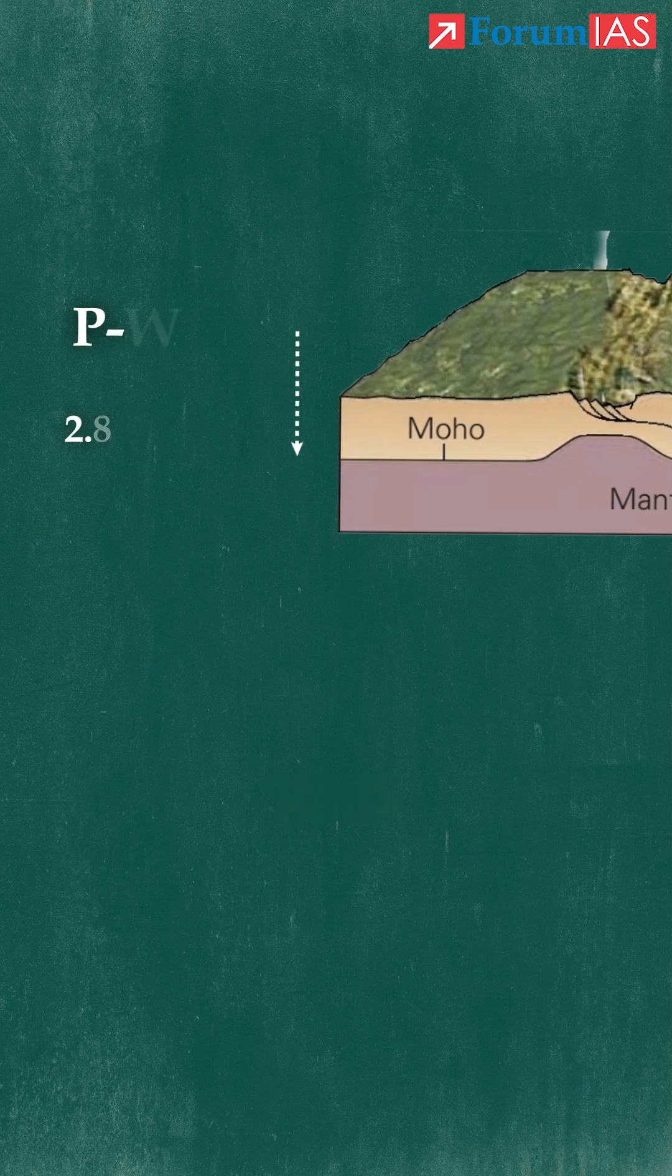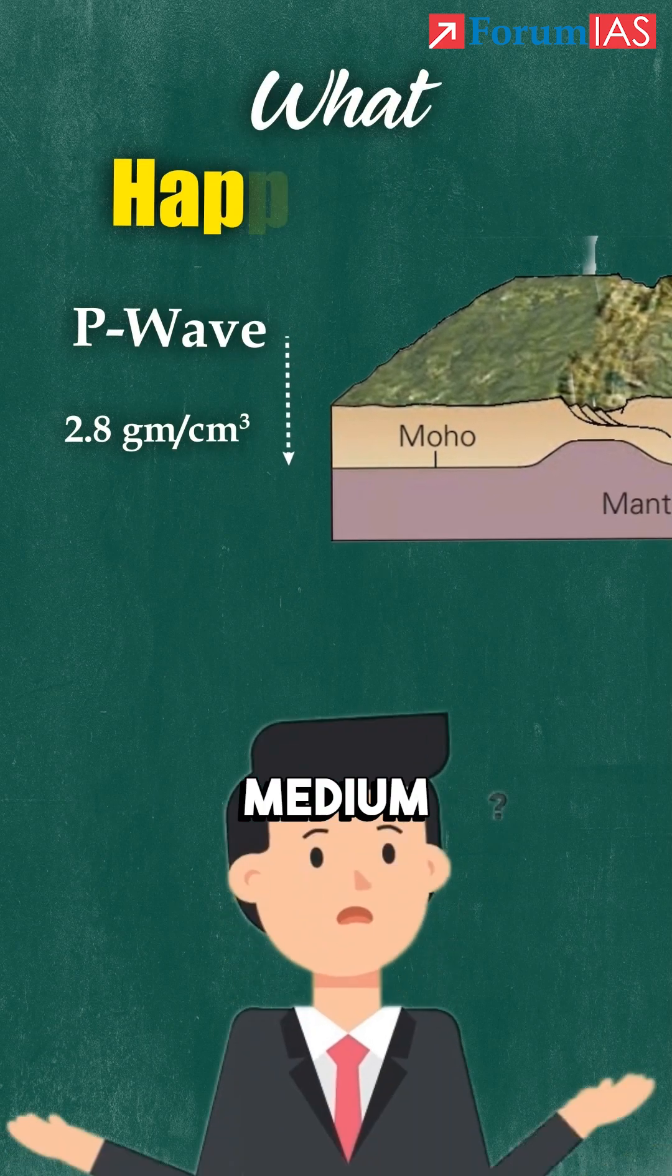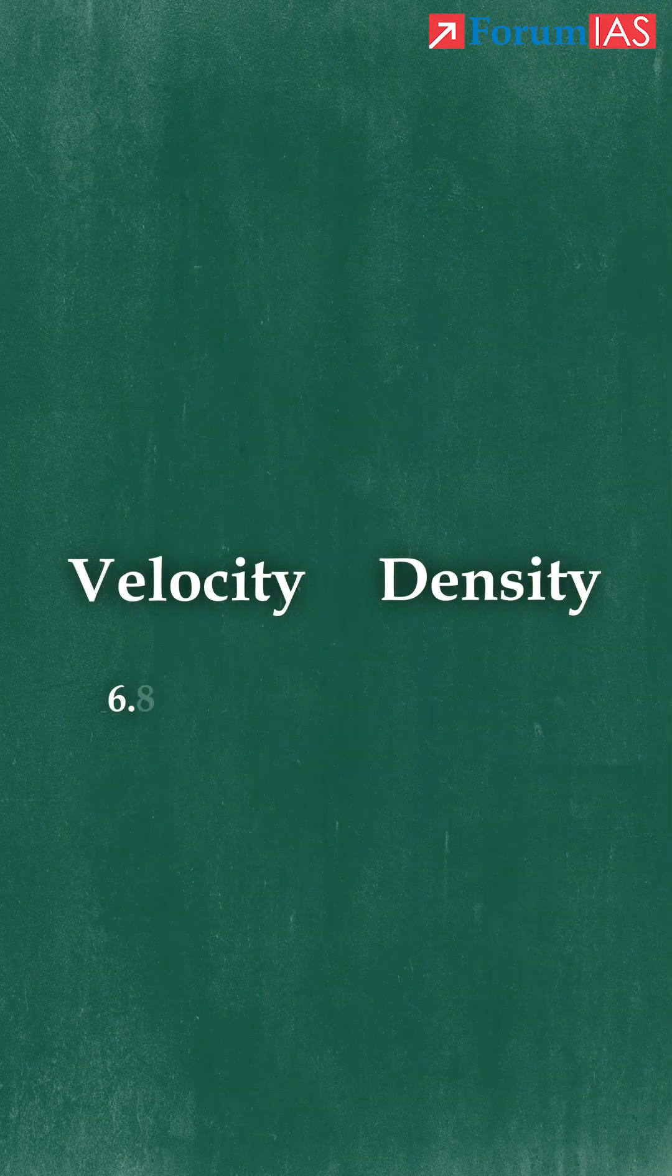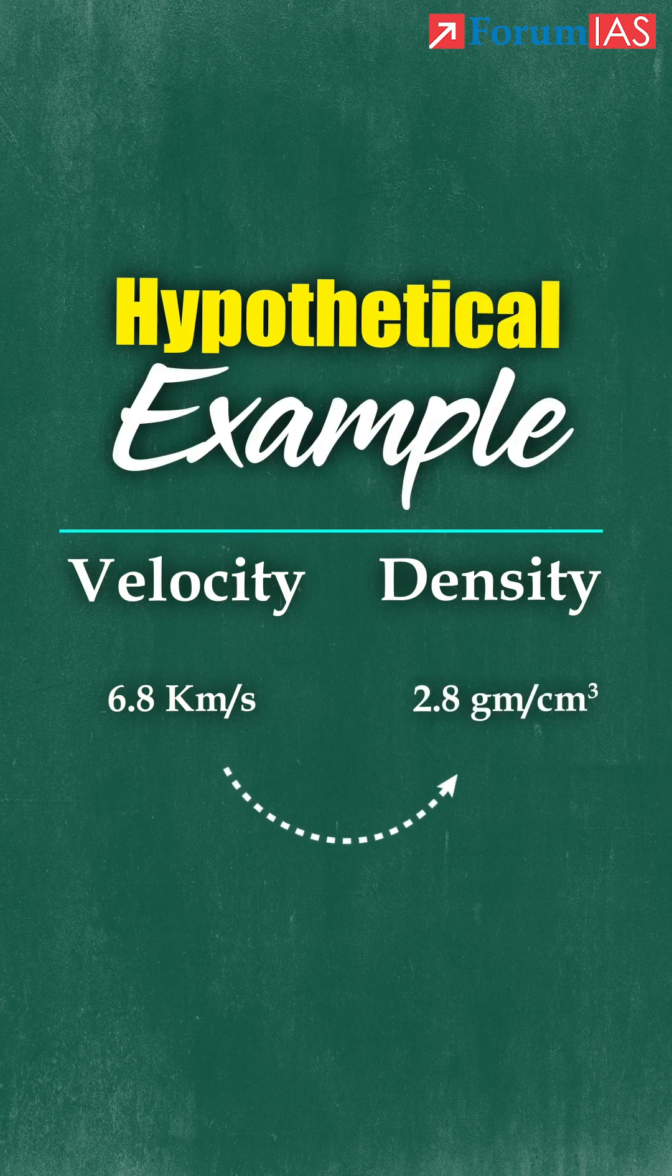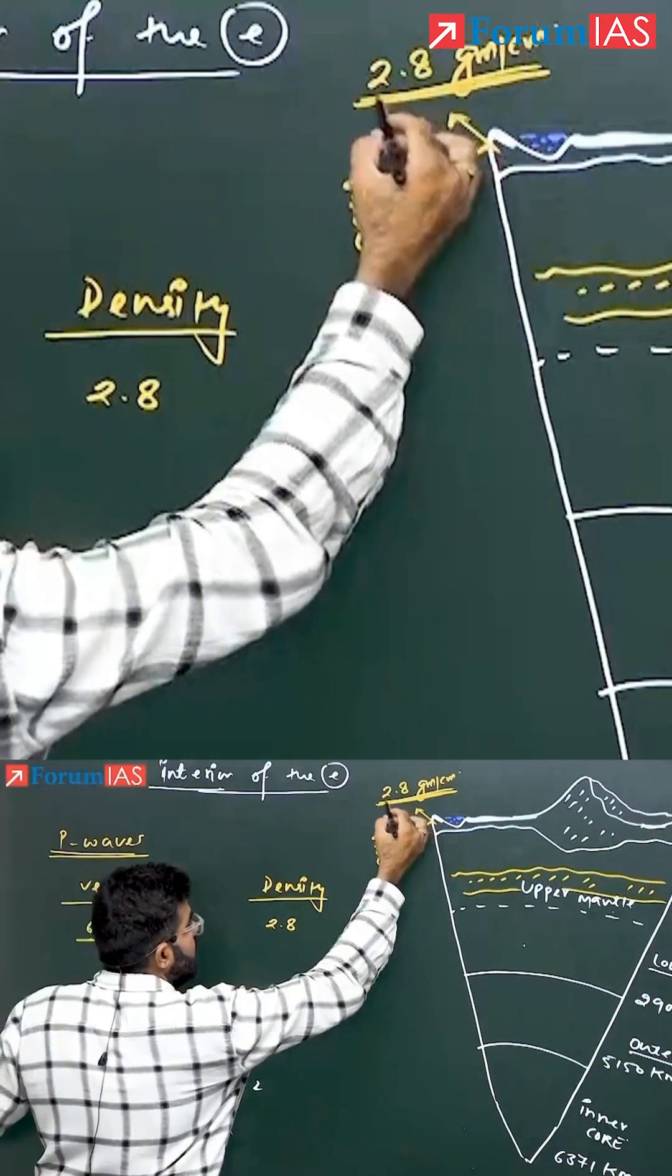This P-wave was passing through a 2.8 density medium. Let's take 6.8 kilometers per second—this is a hypothetical example. What is the density here? 2.8. Now if I assume the upper one is the lightest one, as you are going towards the bottom, what happens with the density? Density increases.